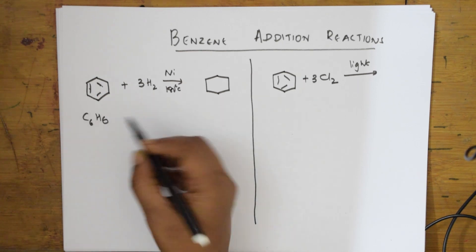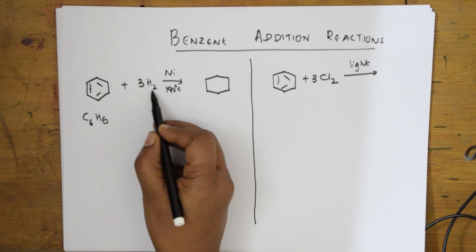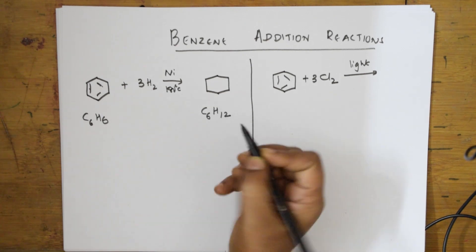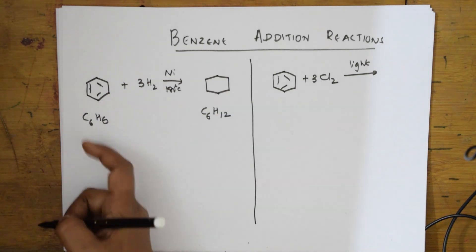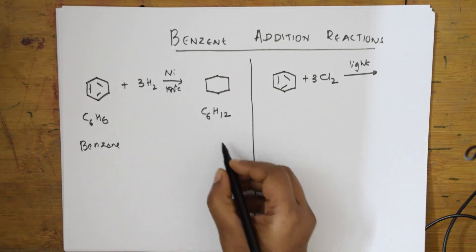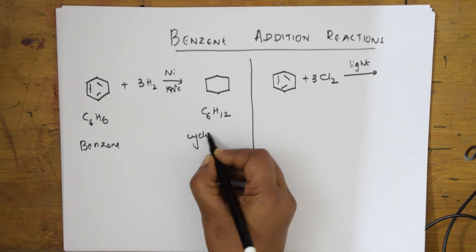This is C6H6. Now to this six I am adding six more hydrogens, so this becomes C6H12. The name of this compound is cyclohexane.